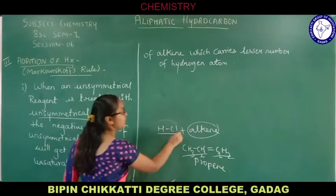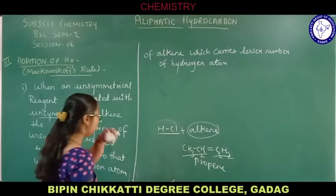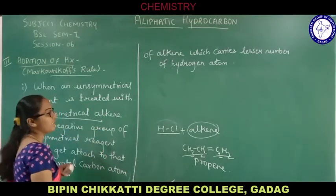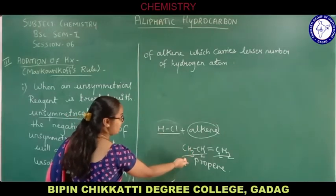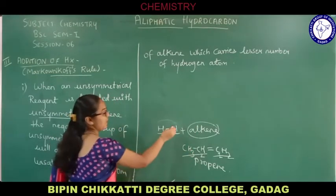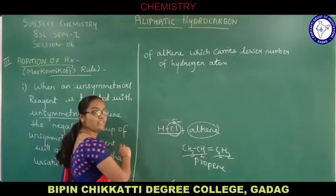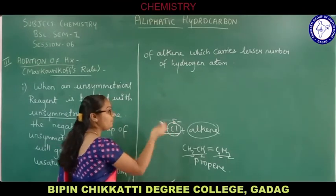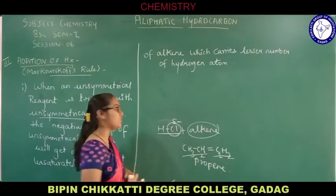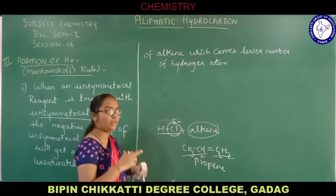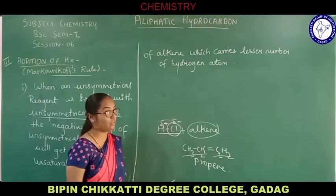The unsymmetrical reagent has to get added to the unsymmetrical alkene. When an unsymmetrical reagent is getting attached to an unsymmetrical alkene, the negative terminal — and the negative terminal here is obviously chlorine or bromide — because chlorine being the most electronegative species will try to pull electron density towards itself, acquiring negative charge, while hydrogen acquires partial positive charge.